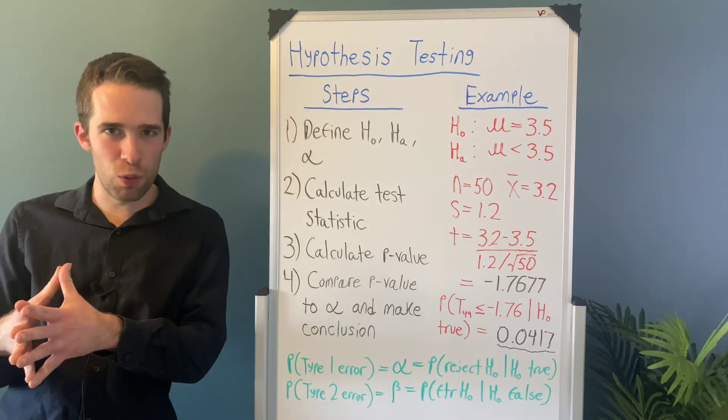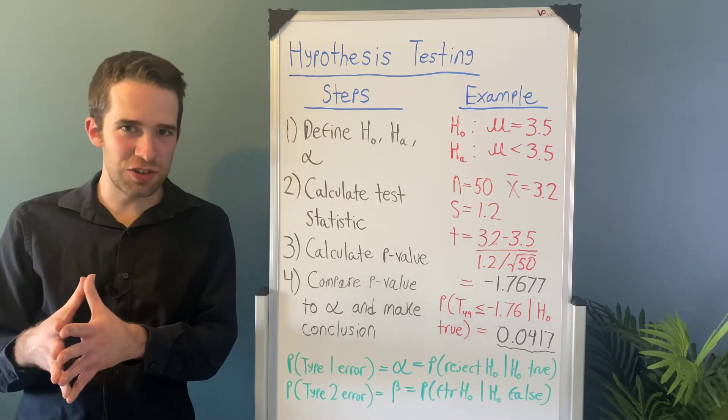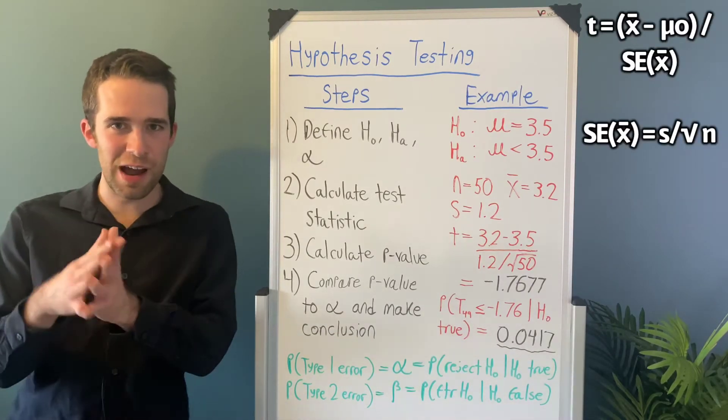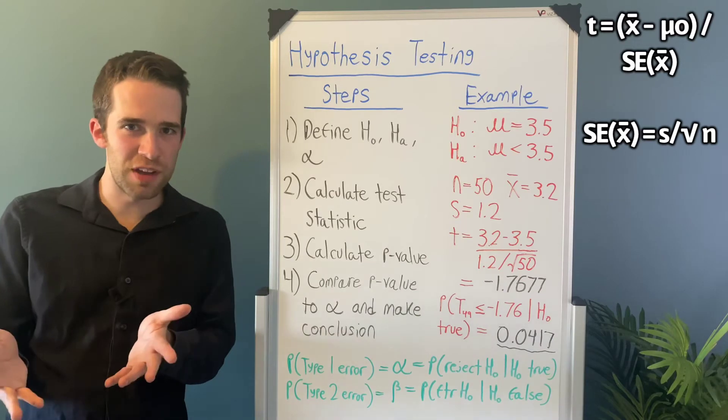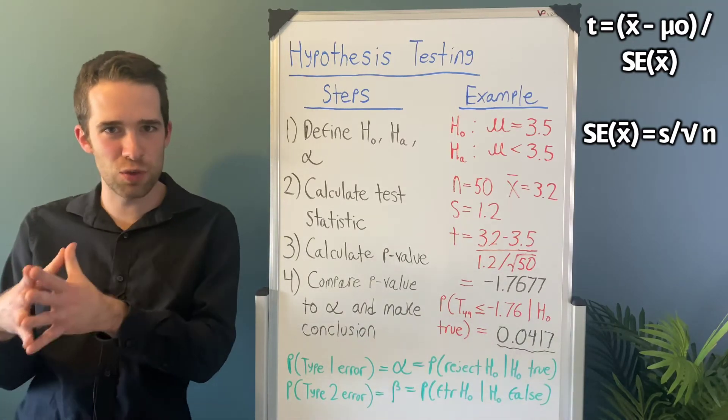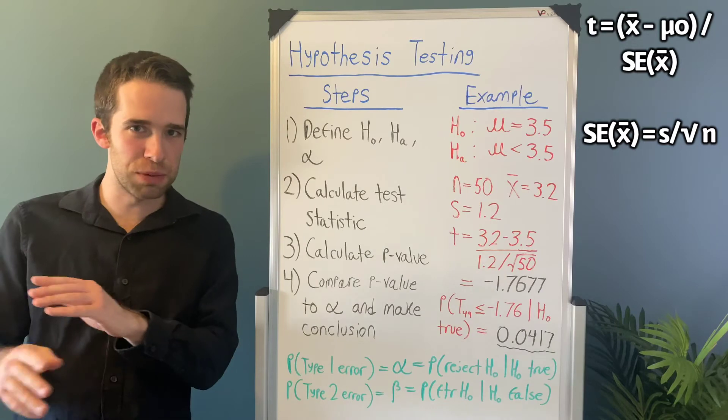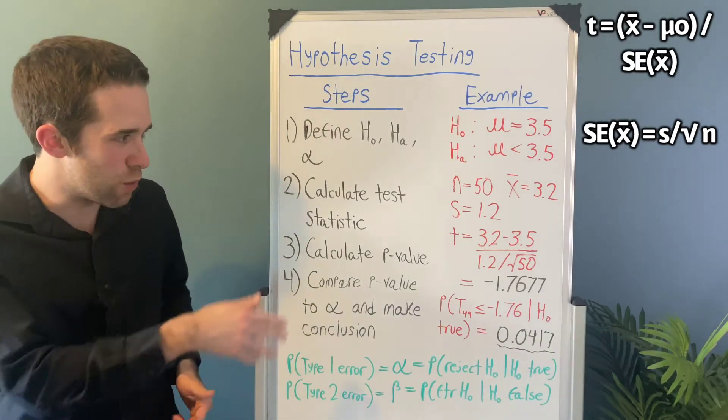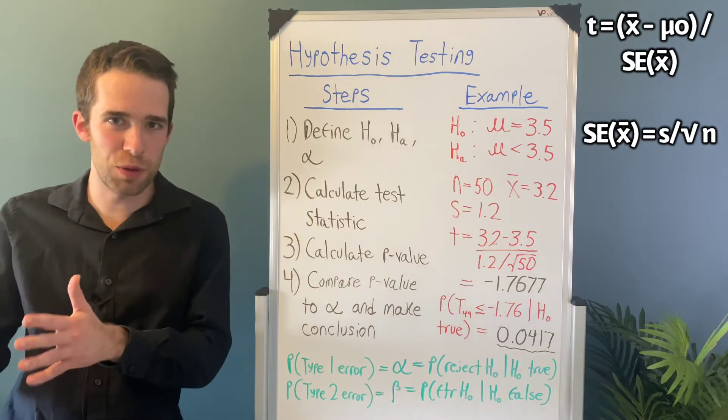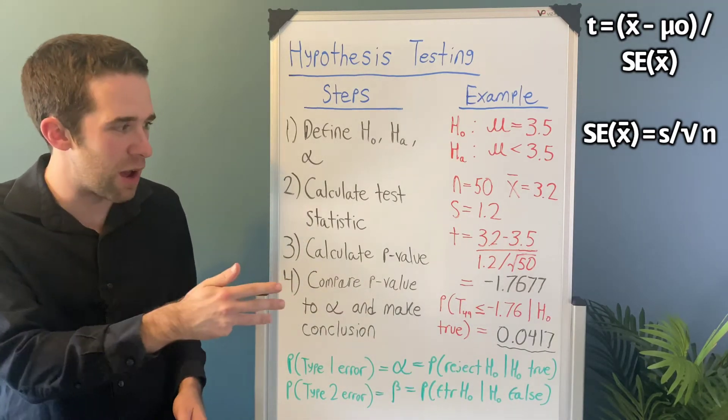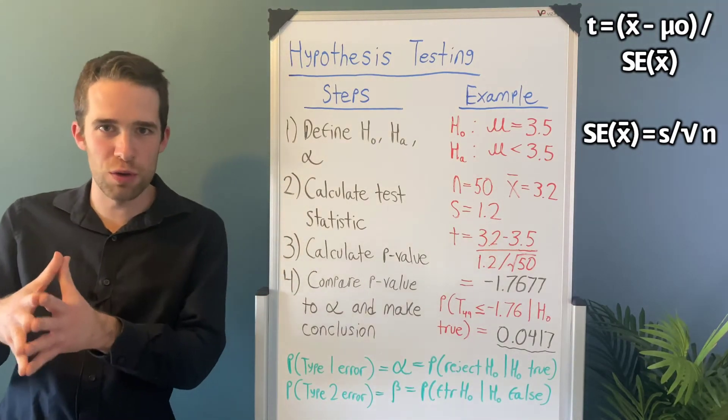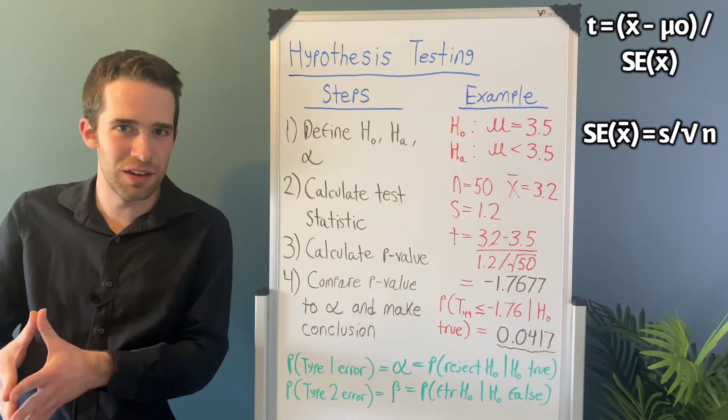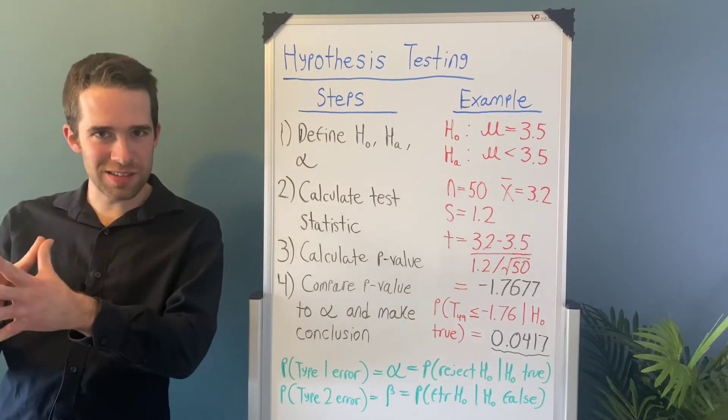The t statistic for a one sample t test is just equal to x̄ minus μ₀ over the standard error of x̄, where the standard error of x̄ equals s divided by the square root of n. So if we just plug all our numbers from our example in here, we get t equals 3.2 minus 3.5 divided by 1.2 over the square root of 50, which gives us negative 1.7677. Now that you've calculated your test statistic, you're going to move on to step three.